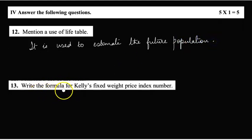Thirteenth: write the formula for Kelly's fixed weight price index number. So it is P₀₁(K) equals—an easy way to remember is write Σp₁ ÷ Σp₀. For Kelly's price index number the weights are the fixed quantities. So multiply the numerator and denominator by q × 100.